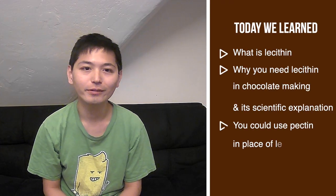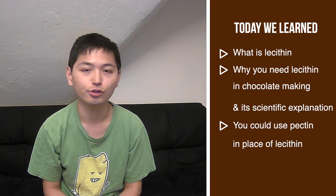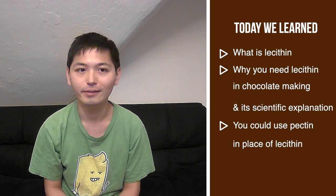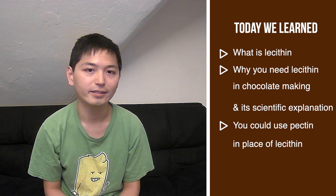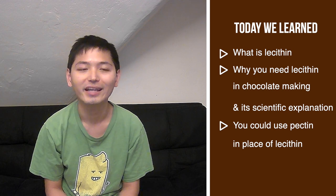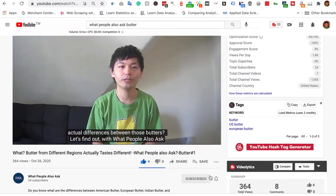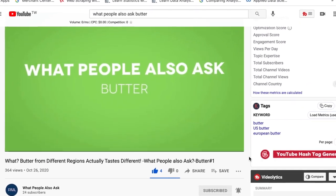Let's recap. Today we learned what lecithin is, why you need lecithin in the chocolate-making process and its scientific explanation, and that you might be able to use pectin in place of lecithin in the milk chocolate-making process. If you made it to the end of the video, chances are you enjoy learning what people also ask on Google. Reading PAA yourself can be a pain, so here's the deal: I'll do it for you and upload a video compiling PAA results once a week. All you have to do is hit the subscribe button and the bell icon so you won't miss any PAA report. So just do it right now — bye!